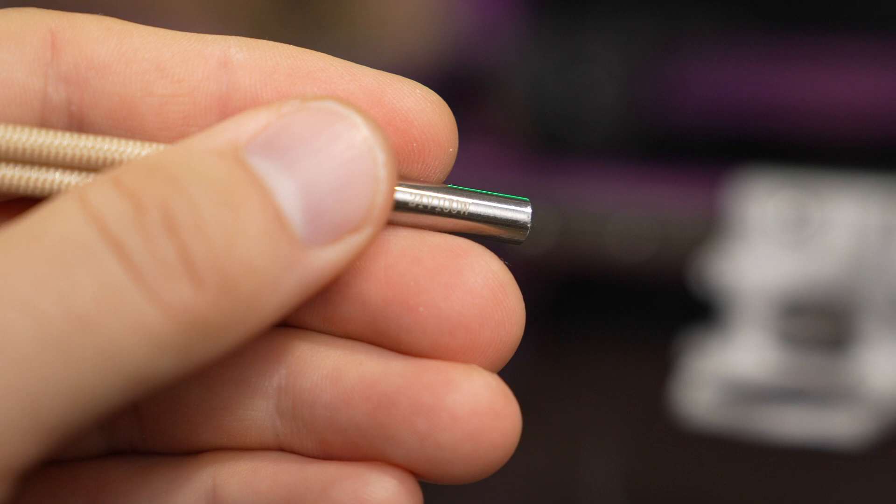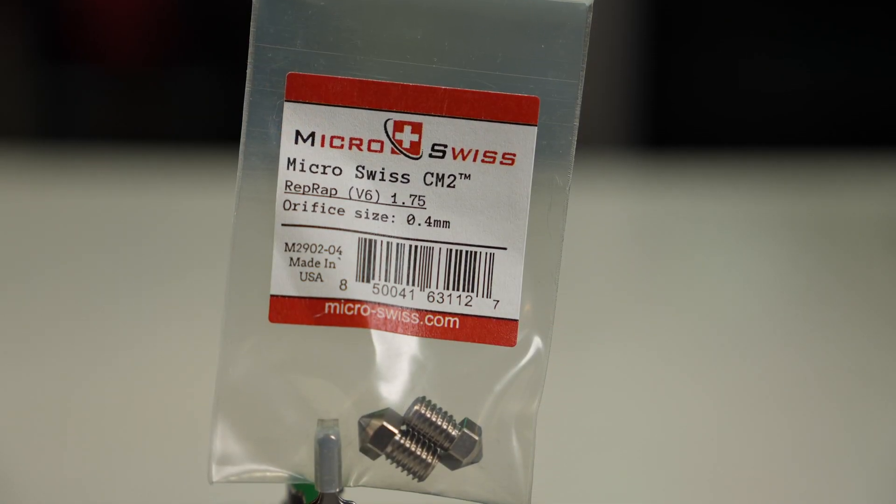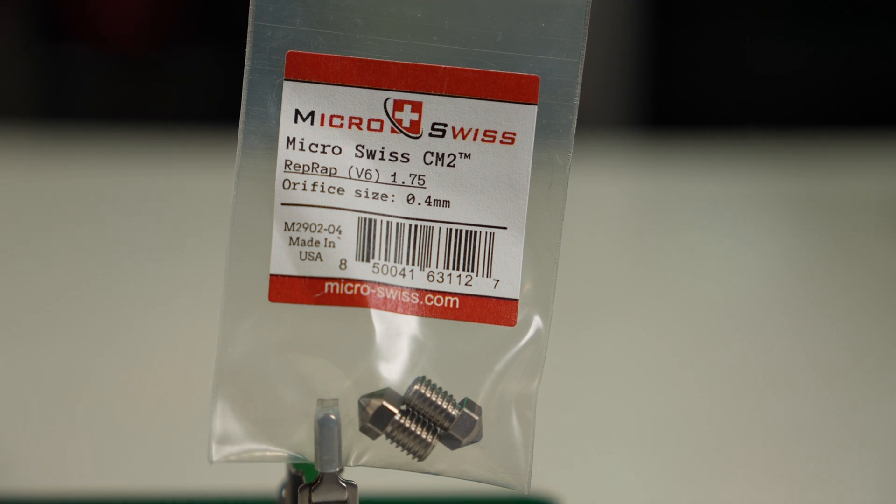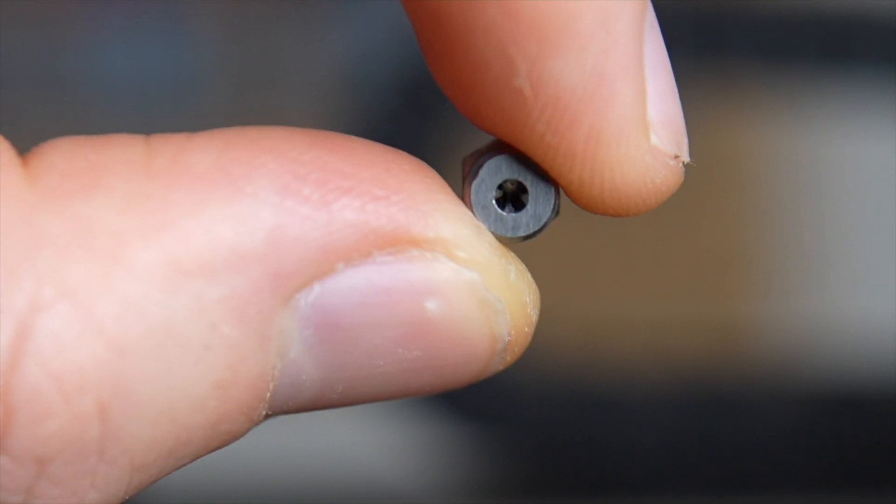I'm pairing this with a 100W 24V heater cartridge, and a PT-1000. My initial plan was to use a 0.4mm CM2 nozzle, but I ended up later swapping it out for the Tungsten Basel nozzle that we covered last year.